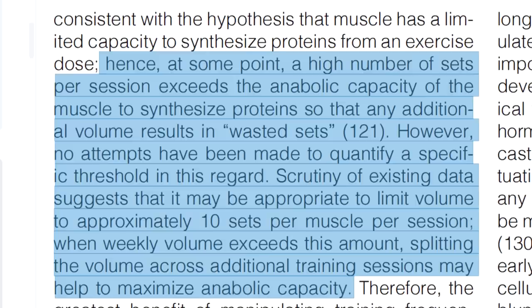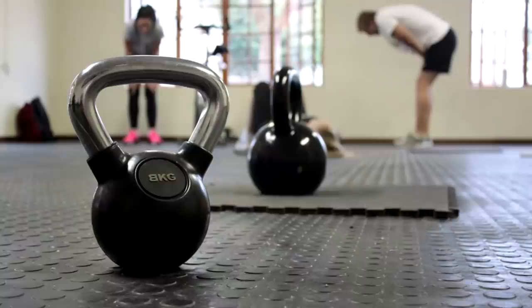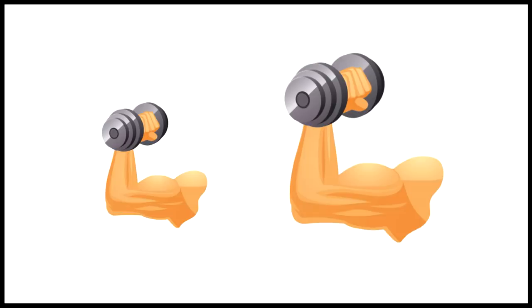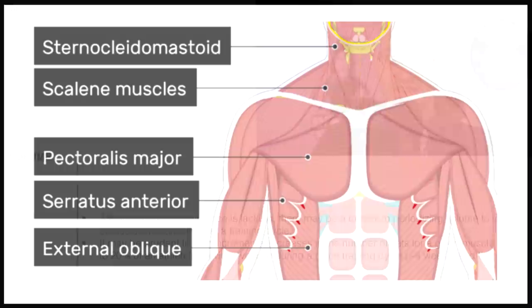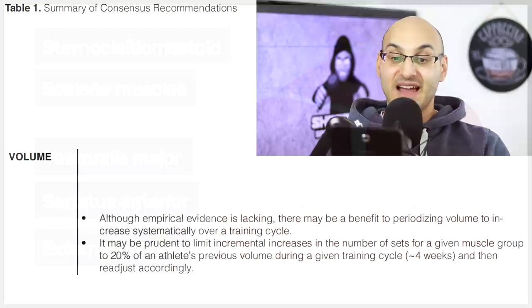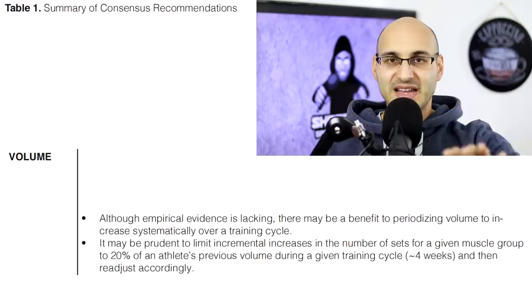When weekly volume exceeds 10 sets per muscle per session, splitting the volume across additional training sessions may help maximize anabolic capacity. What increased volume does allow is repeated stress on the muscle fibers and repeated dynamic contractions. There may be a benefit to periodizing volume — increasing it systematically over a training cycle. It may be prudent to limit incremental increases in sets for a given muscle group to 20% of an athlete's previous volume during a given training cycle, then readjust accordingly.